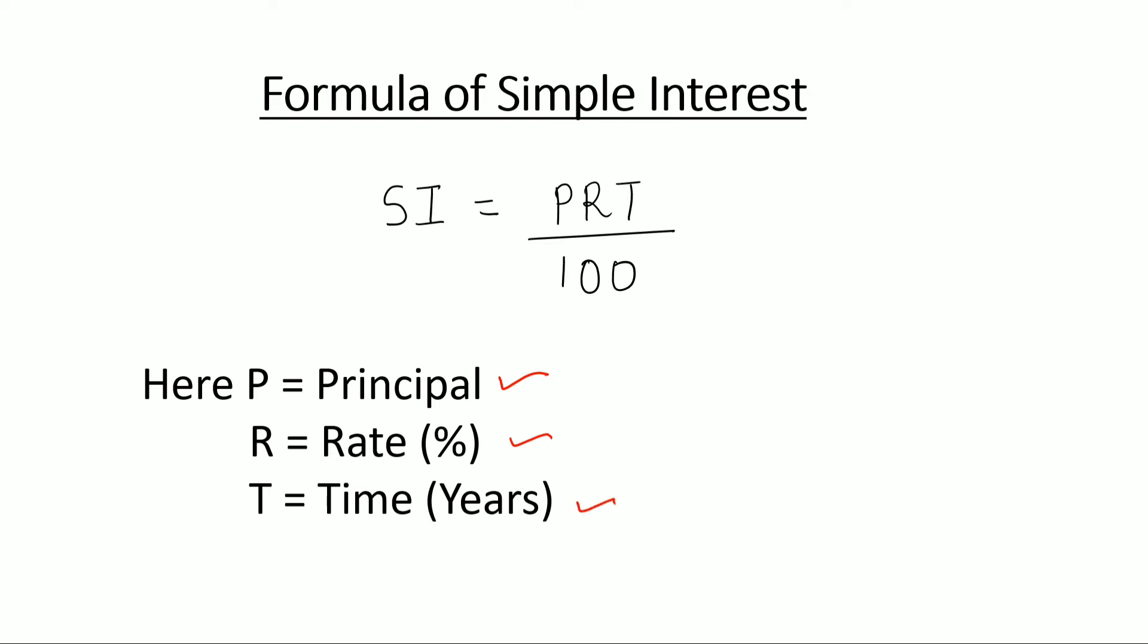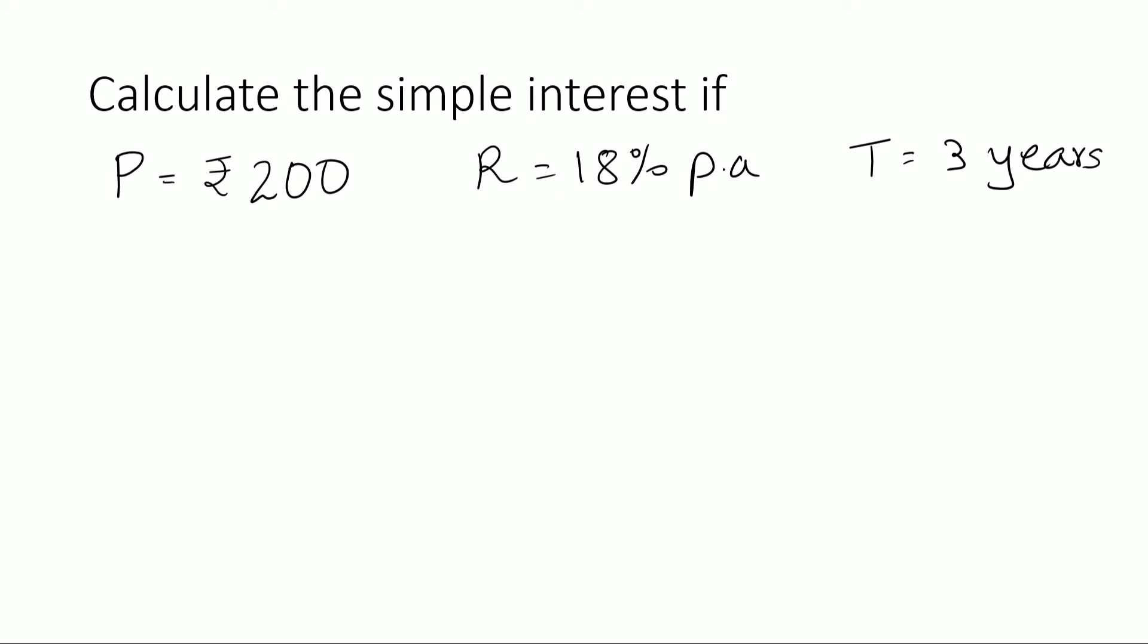Let's see an example. Calculate the simple interest if P or the principal is rupees 200, R equals to 18% per annum or per year and T equals to 3 years.